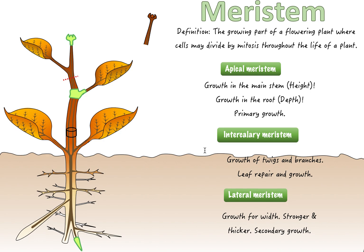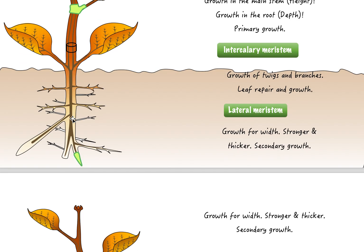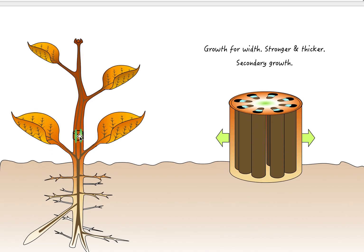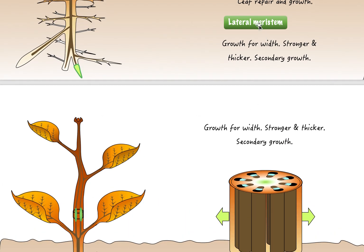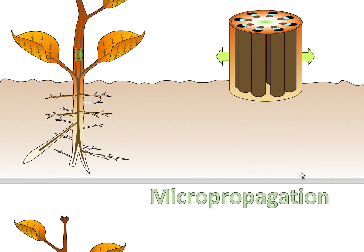Let me show you a picture of this, because it might be a bit confusing. If we zoom into the stem structure, the lateral meristems, when they grow, will grow thicker and stronger — so instead of going up or down, the stem gets thicker in width.